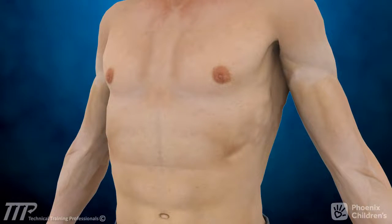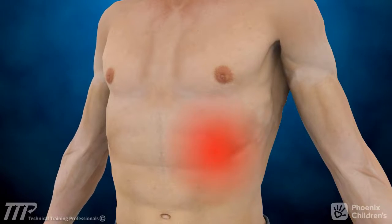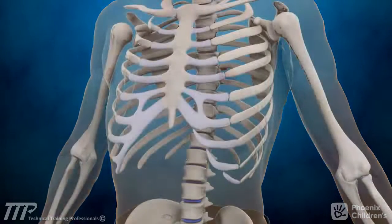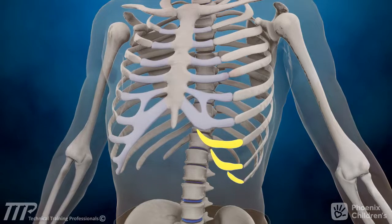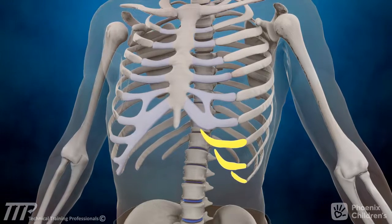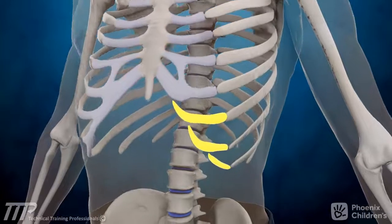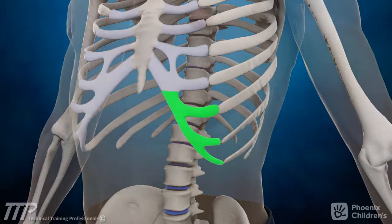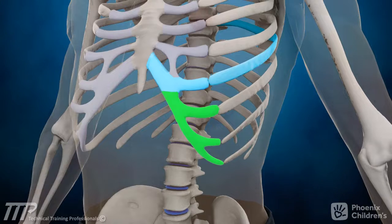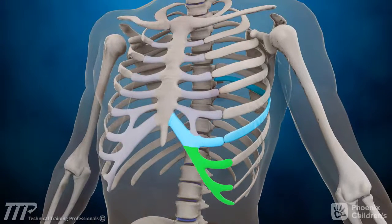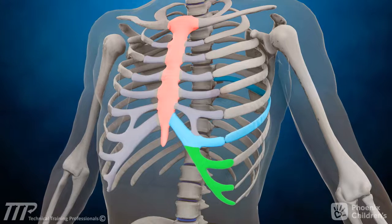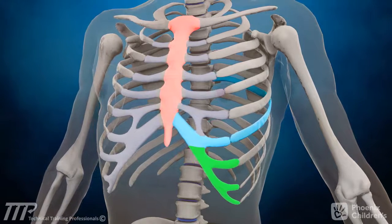Slipping Rib Syndrome is a condition of pain in the lower chest wall caused by a deformity in the false cartilages. Normally these cartilages connect to the ribs above until the seventh rib, which is connected directly to the sternum. This functions to stabilize the chest wall and the ribs.